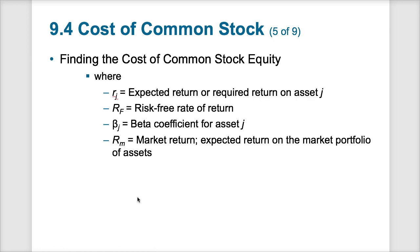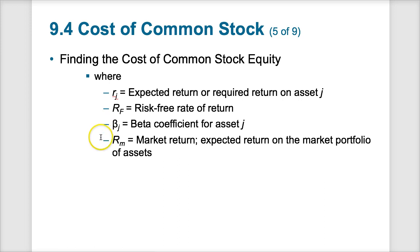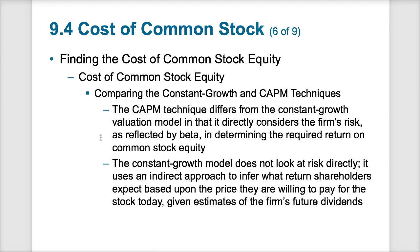To find the cost of stock equity using CAPM, you would look up a three-year Treasury for the risk-free rate, look up the beta for a publicly traded stock, and use the expected market return from a market portfolio. If the company is in the S&P 500, you would use the S&P 500 market return. So for the cost of common equity, comparing the constant growth model and CAPM — the CAPM directly considers the risk of the firm as reflected by beta.